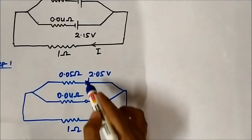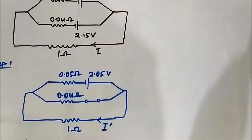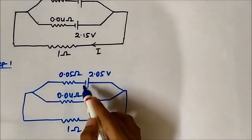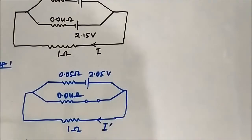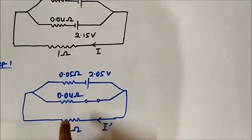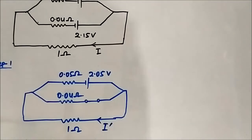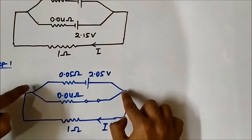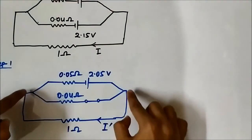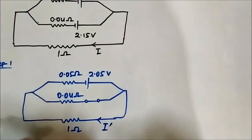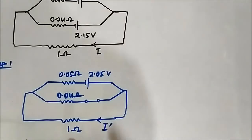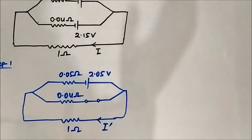This is the only voltage source. Looking at the circuit, 1 ohm and 0.04 ohm are in parallel connection — their two ends are connected at the same two points.